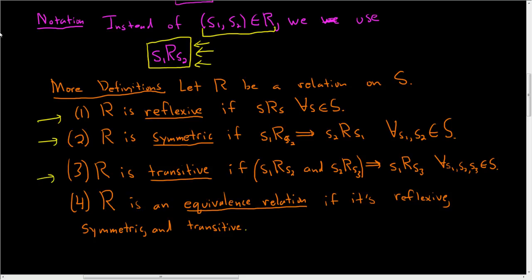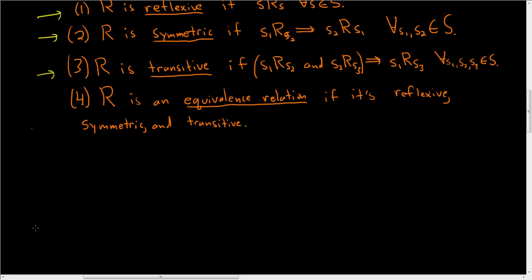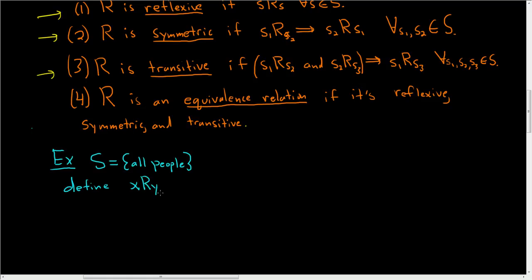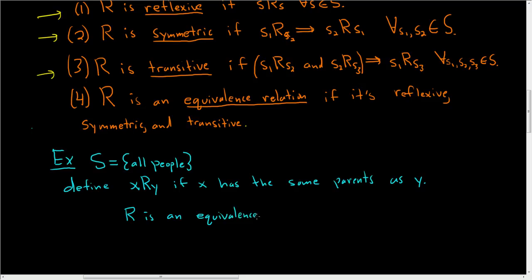Let's look at a couple of examples. First example: let S be the set of all people in the entire world, and define the relation R so that X is related to Y if X has the same parents as Y. In this case, R is an equivalence relation — kind of a silly example, but it shows you can really use relations for anything.